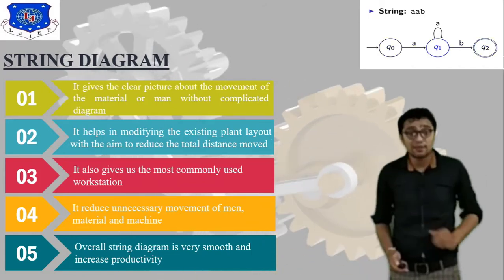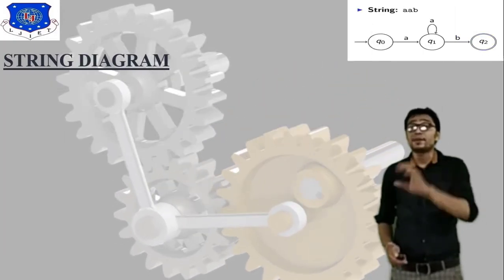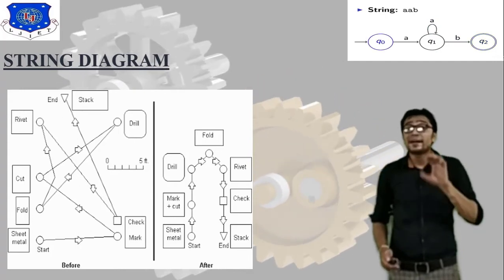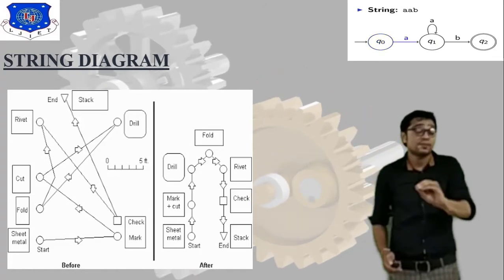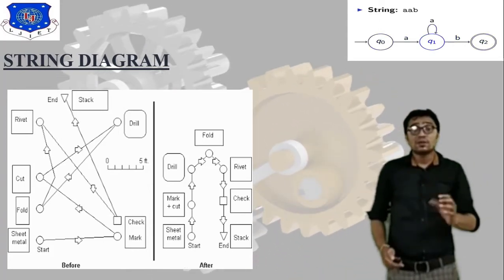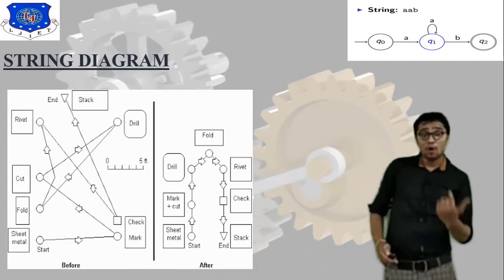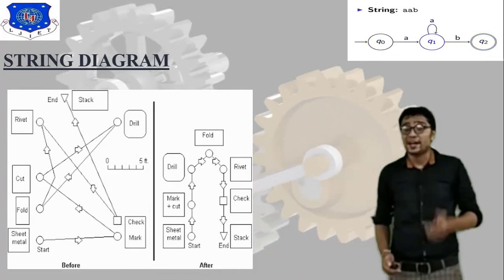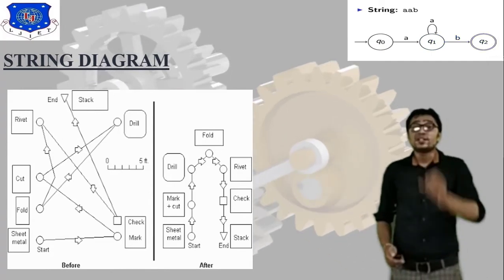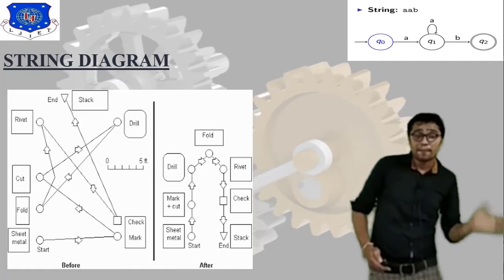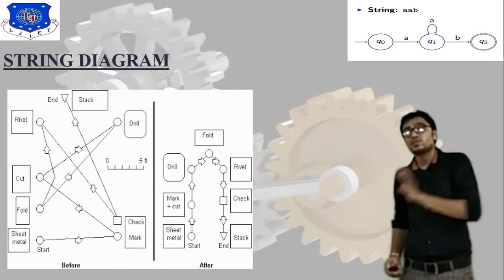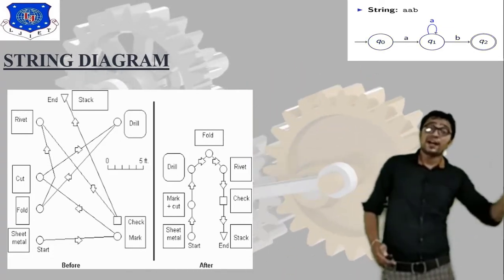For a string diagram tutorial example, consider sheet metal operations in sequence: first is sheet metal, second is mark plus cut, then it is forwarded to another workstation — drilling — followed by feeding, rivet and check, and finally storage. The string diagram shows this complete operation sequence from sheet metal through mark and cut, drilling, folding, rivet, check, and transfer to the storage department.